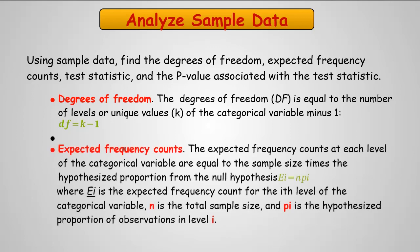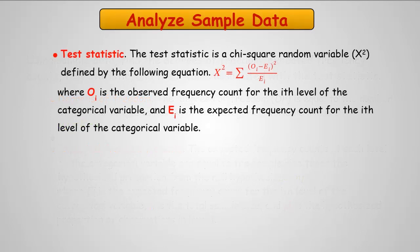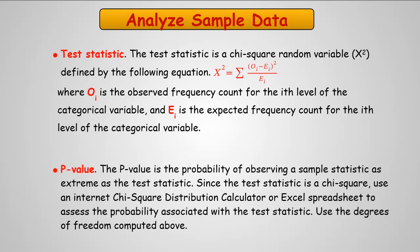The expected frequency counts is going to be at each level of that categorical variable, the sample sizes times what we would hypothesize would represent a portion of the population. Next, we'll produce our test statistic using the chi-square technique, defined as the sum of the observations minus the expected value squared divided by the expected value. Finally, we're going to compute a p-value, and that's the probability of observing a statistic as extreme as the test statistic.